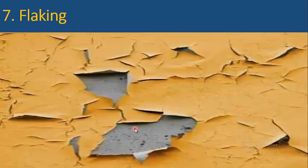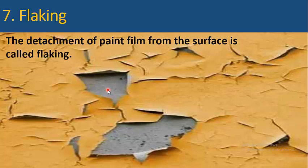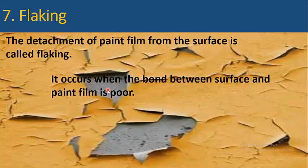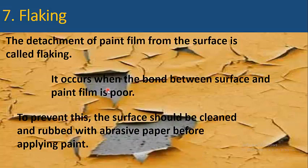Flaking: the detachment of paint film from the surface is called flaking. As you can see in this picture, the paint has detached from the surface. It occurs when the bond between the surface and paint film is poor. To prevent this, the surface should be cleaned and rubbed with abrasive paper before applying paint.